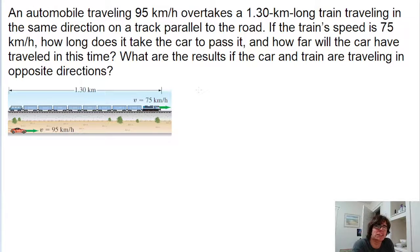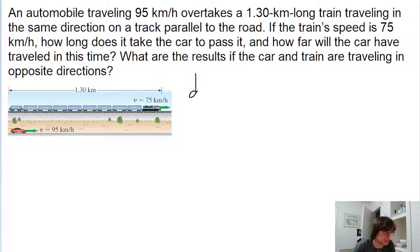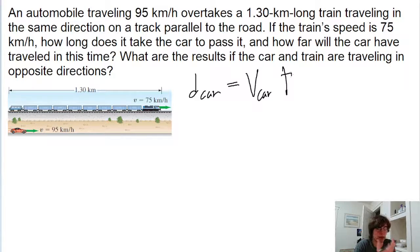For the car to pass the train, the car needs to travel not only the length of the train but also the distance that the train travels during that time. That time interval is basically what the first part of this question is asking us to find. There are a few different ways to represent the distance the car travels. One way is to use the standard speed equation: distance equals speed multiplied by time. So the distance the car travels equals the speed of the car multiplied by the time interval — the time it takes to catch up.